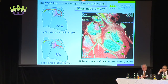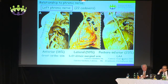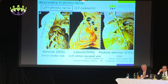Also quite important during procedures within the appendage, or even occluding the os of the appendage — the left phrenic nerve can, in 23% of individuals in our study, pass over the left atrial appendage.